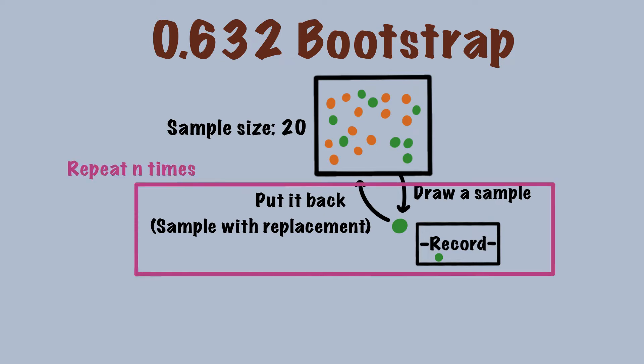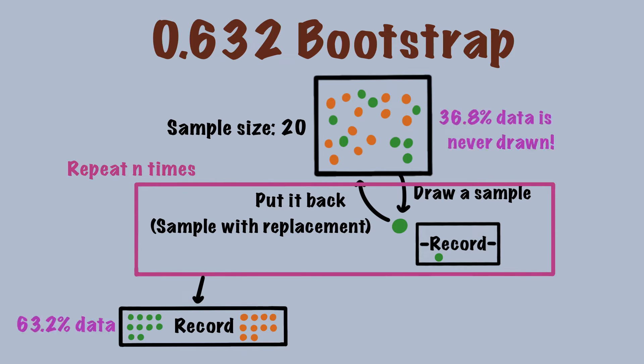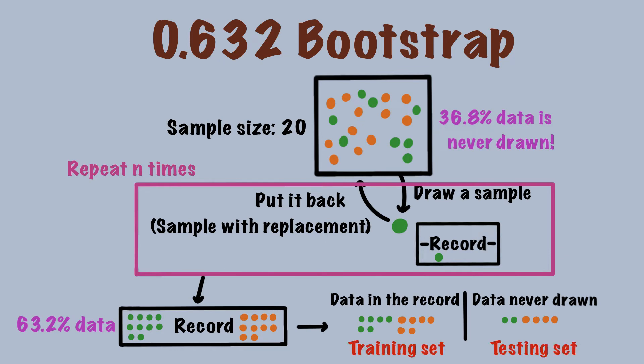Next, we repeat this process n times. Therefore, we repeat the process 20 times because we have 20 samples in the database. After we are done, we have this record with 20 data points we drew. As we said before, roughly 63.2% of data is drawn at least once, but 36.8% of data is never drawn. What we do is separate the samples that are never drawn from the remaining ones. Following this, we use the data in the record as the training set and the data never drawn as the testing set.